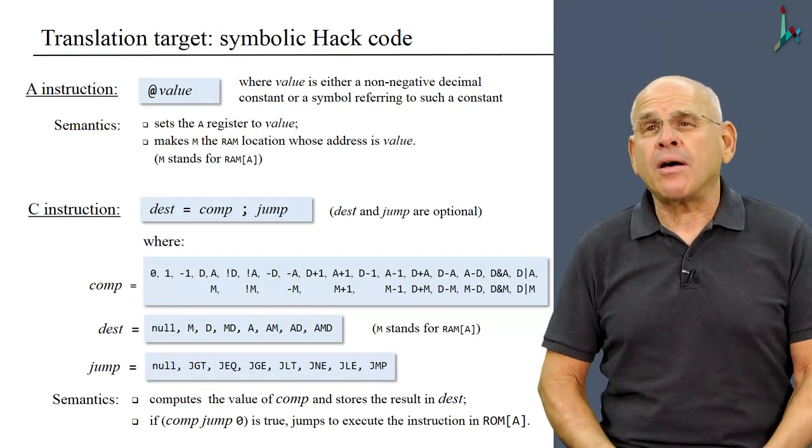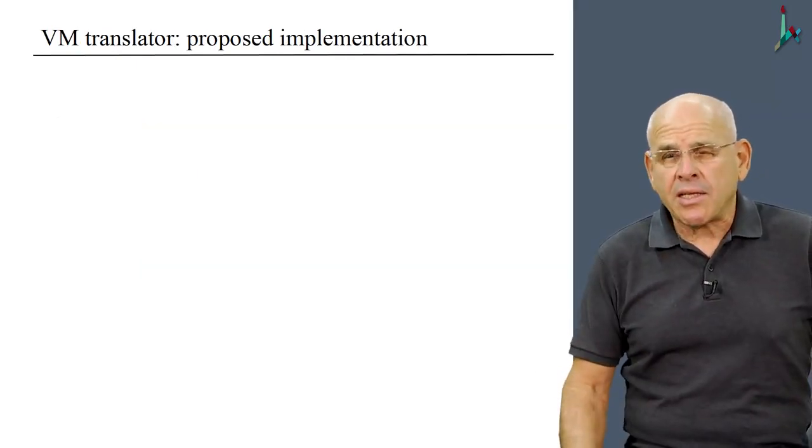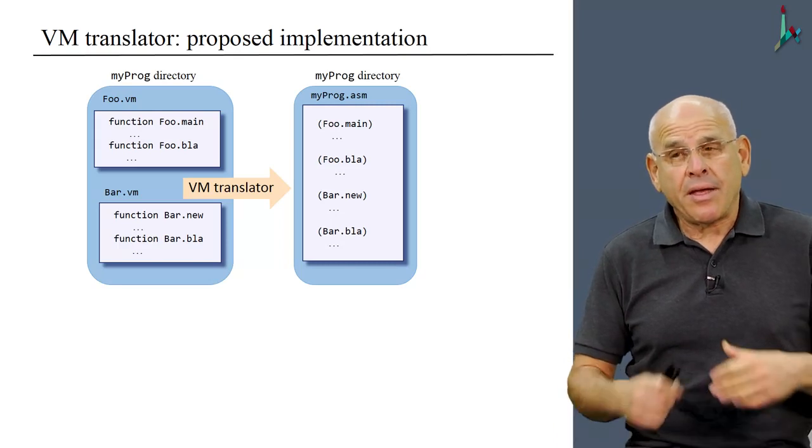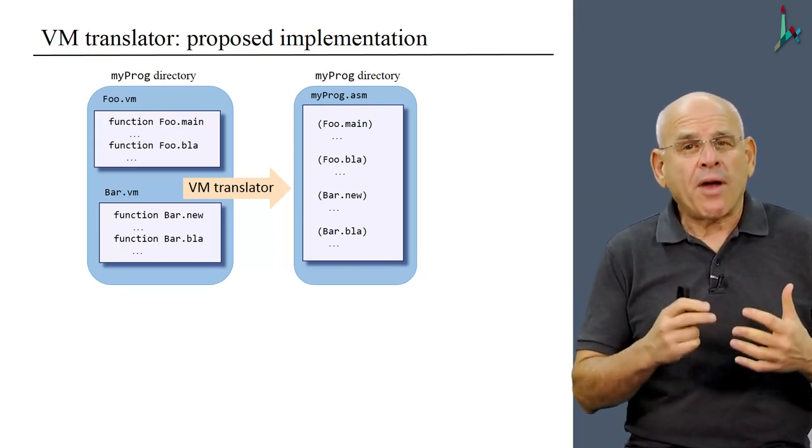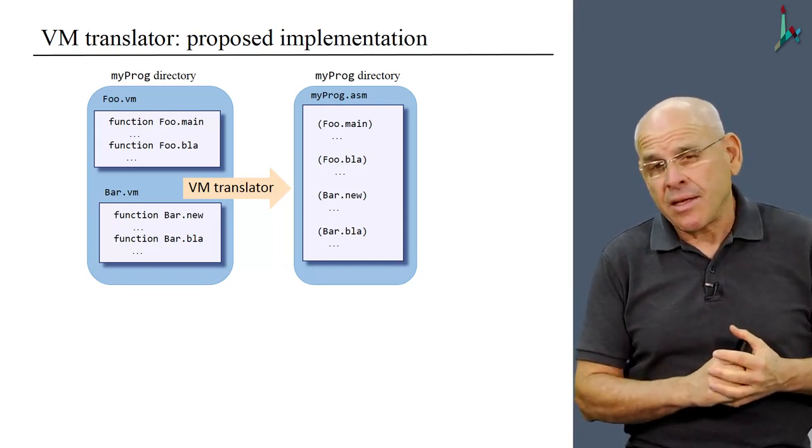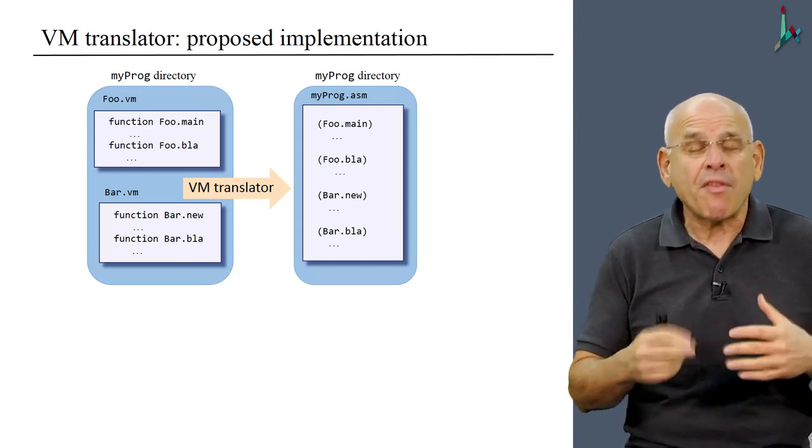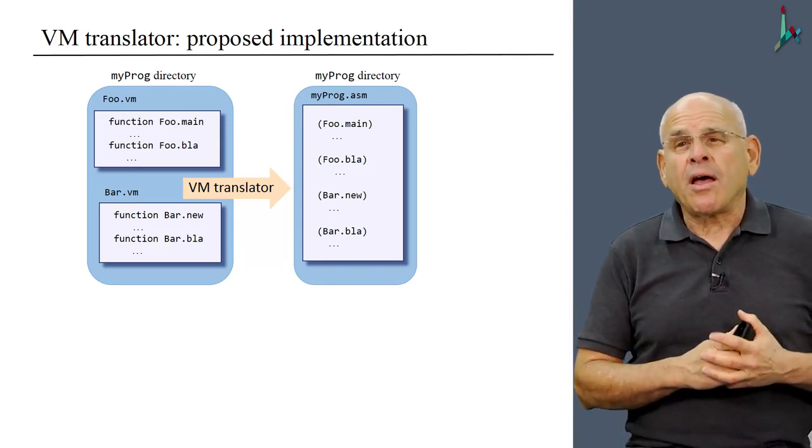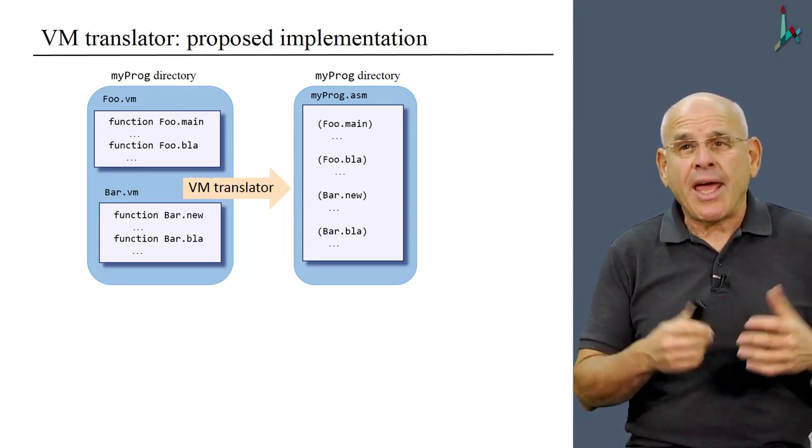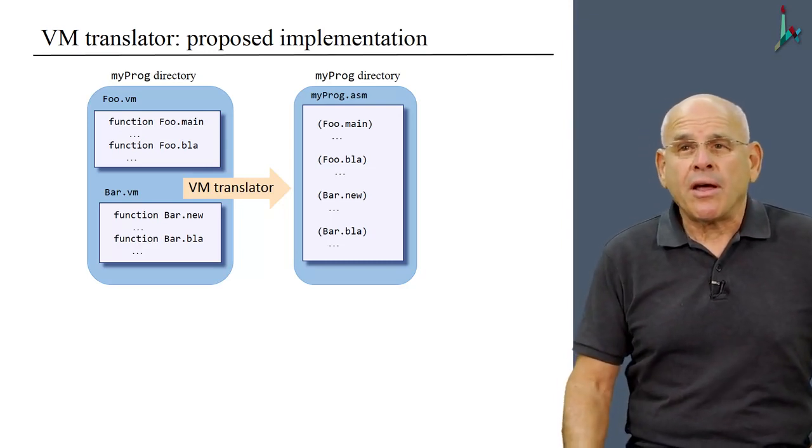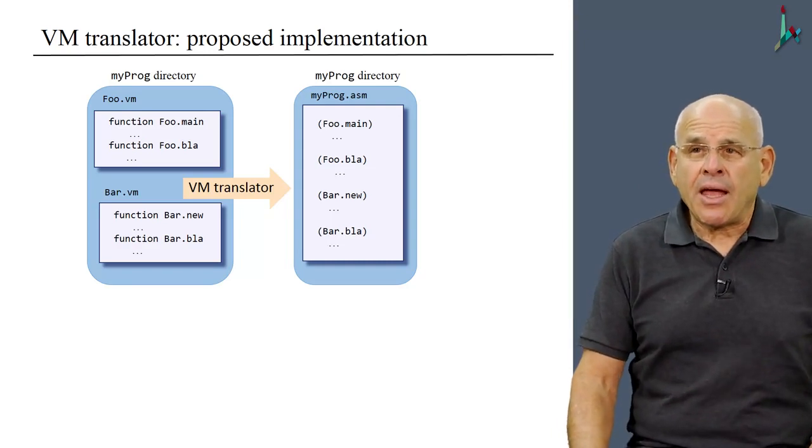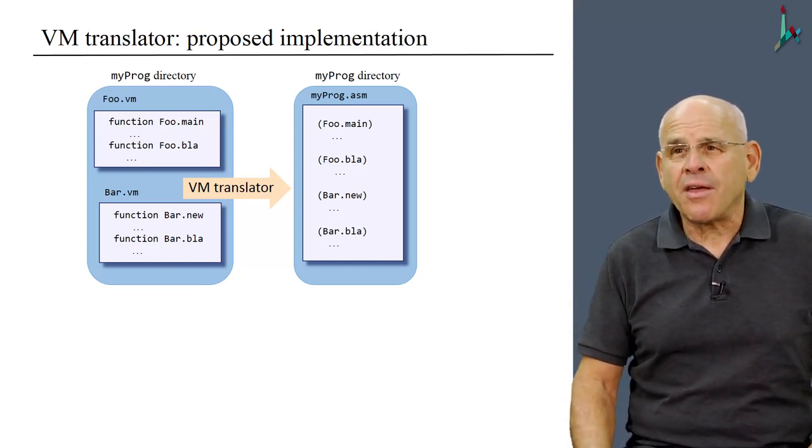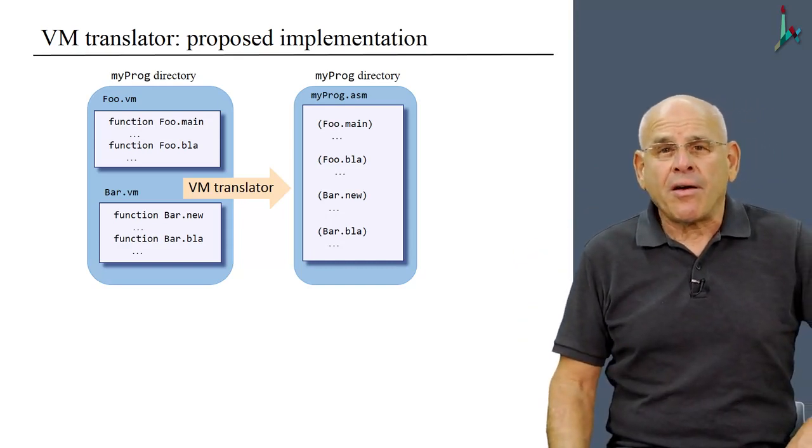And with that, we are ready to describe our proposed implementation. So here again is a diagram that describes the VM translator in action. And we see that in the previous project, if you recall, you were asked to write a VM translator that translates a single given VM file. Well, in this project, one of the things that we want to extend is the ability to handle more than one VM files. So the VM translator that you write should be able to also handle a directory that contains one or more VM files as we see in this diagram here. And in any event, it always will generate a single assembly file that contains all the sequence of all the functions that we are translating.